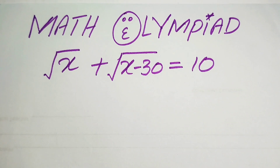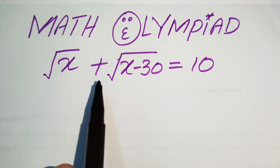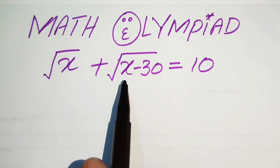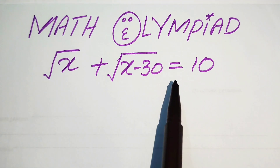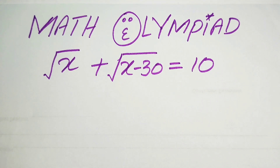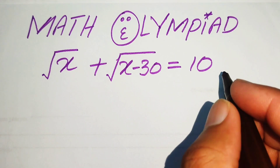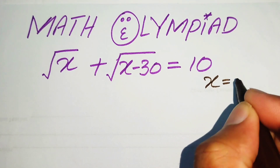Hello everyone, welcome. We are going to solve this Math Olympiad algebra problem. We have the equation: square root of x plus square root of x minus 30 equals 10, and we will solve this problem for the values of x.